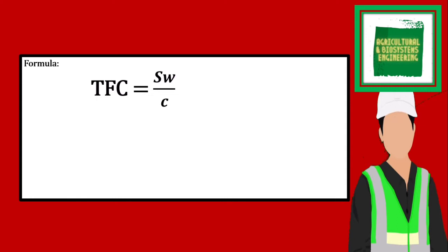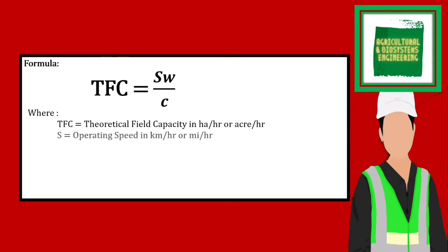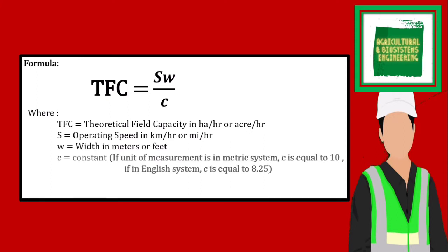TFC is the theoretical field capacity in the unit of hectare per hour or acre per hour. S is the operating speed in km per hour or miles per hour, W is the width in meters or feet, and C is the constant.